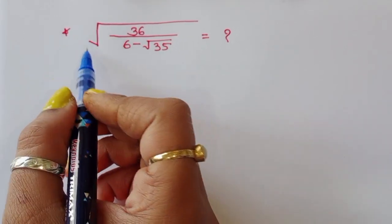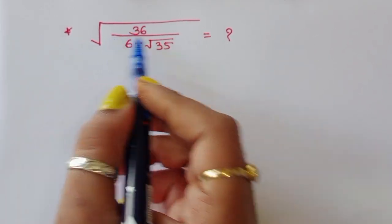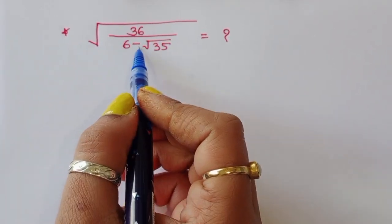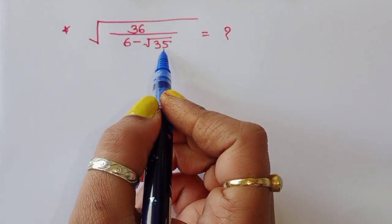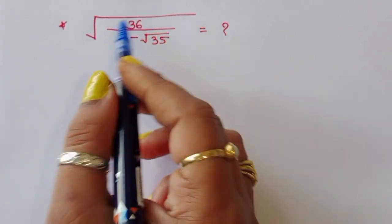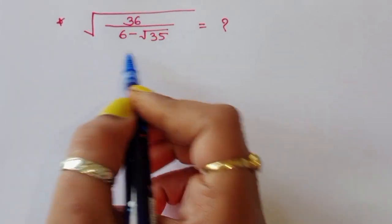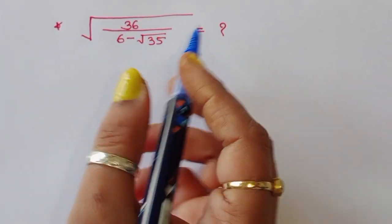The question is: given square root of 36 divided by (6 minus square root of 35), what is the value of this term? Let's find out.